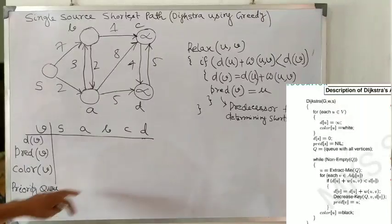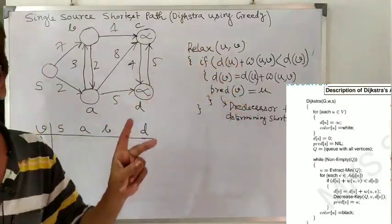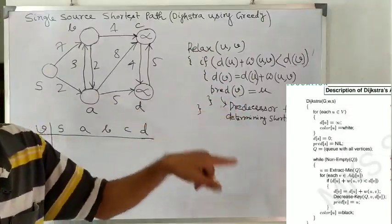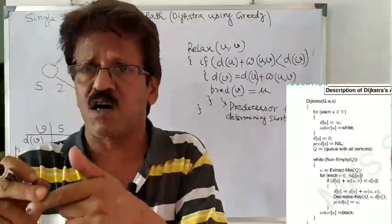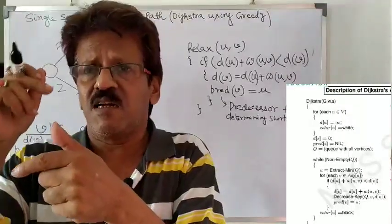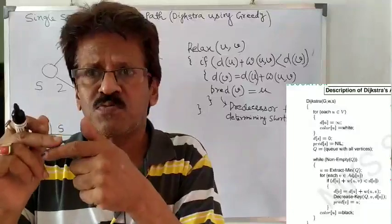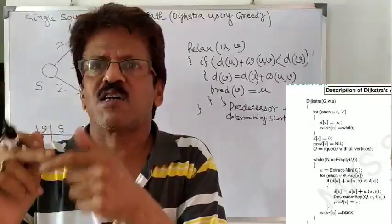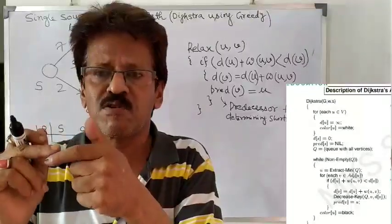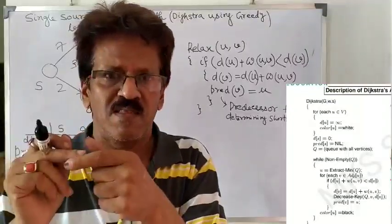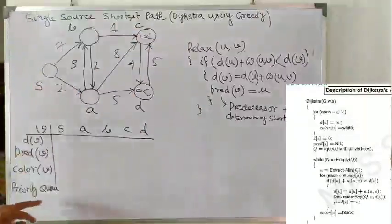Another concept is the priority queue. Why do we apply a priority queue? In the algorithm, you can see that within the while loop there is a for loop — two nested loops. If we apply the priority queue concept, the complexity goes down significantly from O(n²) because of those two nested loops. If we apply the heap or priority queue concept, the complexity will go down. That is why we use the priority queue.